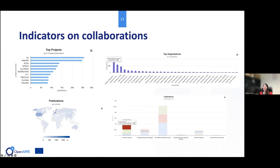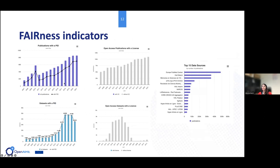To understand how multidisciplinary your community is, we can analyze publications by fields of science. We can also show indicators about FAIRness — findability, accessibility, interoperability, and reusability of research products. Specifically, we look at whether publications or datasets have a persistent identifier, whether they come with a license, and where they are available, showing the top 15 data sources.